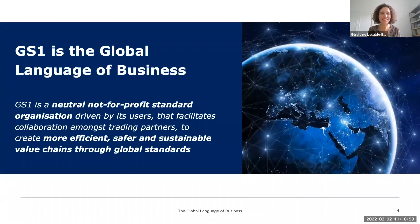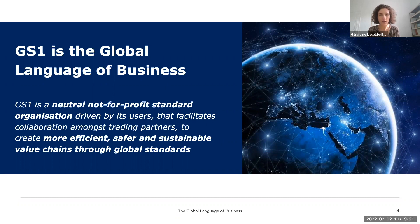Continuing on definitions. In the UDI context, you very often find GMDN and GS1 close by. GS1 is a neutral, not-for-profit organization with the purpose of developing standards. We are member-driven, with a global office but also local offices in many countries around the world. Our standards are used in the industry to identify products, to mark products, and to exchange information on these products around the supply chain, and also, as is the case with UDI, with regulators.